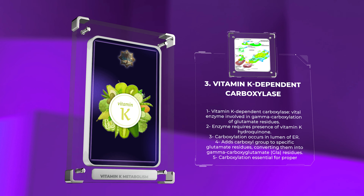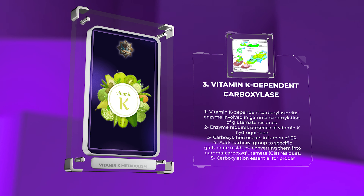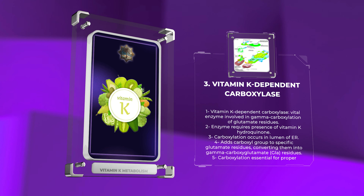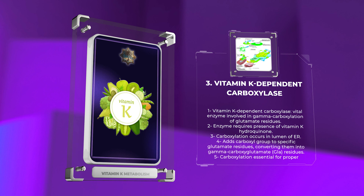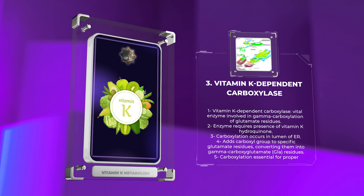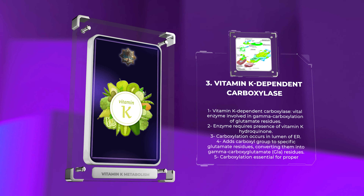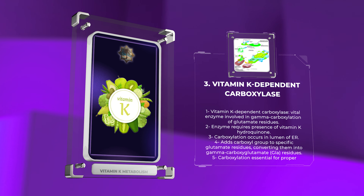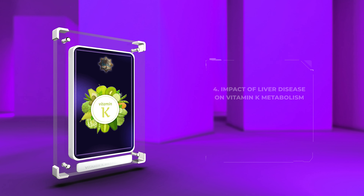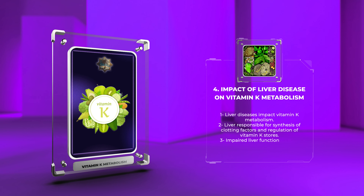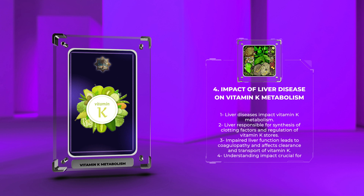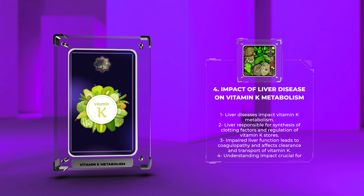Vitamin K reduction is a crucial step in the metabolism of this vitamin. Reduction of vitamin K to its active hydroquinone form is facilitated by an enzyme called vitamin K epoxide reductase (VKOR). VKOR acts in the ER and utilizes vitamin K-quinone as a substrate, converting it to its hydroquinone form. This reduction reaction is essential for the regeneration of active vitamin K and ensures a continuous supply for the synthesis of vitamin K-dependent proteins.